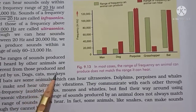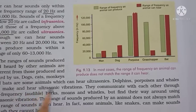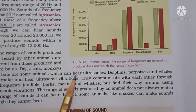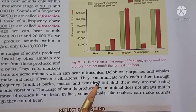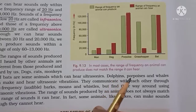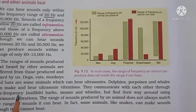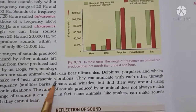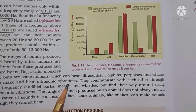Dogs, cats, monkeys, and bats are some animals which can hear ultrasonic sound. Dolphins, porpoises, and whales can make as well as hear ultrasonic vibrations. They communicate with each other through low-frequency audible barks, moans, and whistles, but they find their way using ultrasonic vibrations.